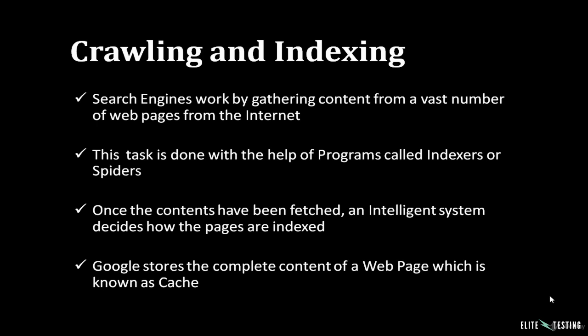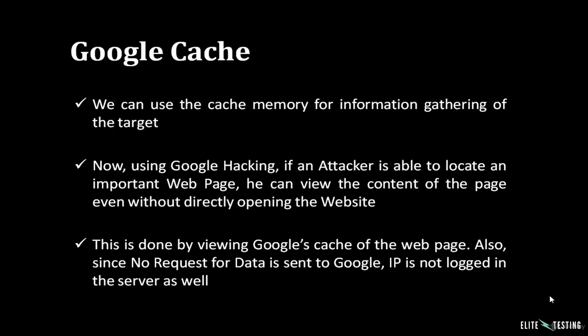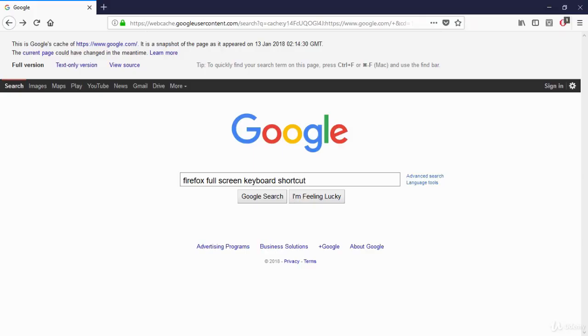Google also stores the complete content of a web page, known as cache. We can use the cache memory for information gathering of a target. Using Google hacking, if an attacker is able to locate an important web page, they can view the content of the page even without directly opening the website. This is done by viewing the Google cache of the web page. Since no request of data is sent, the IP is not logged in the server.